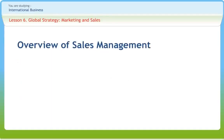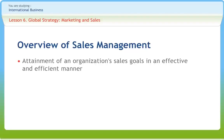Managing the sales function is a critical skill for the success of distributors and manufacturers in the power transmission or motion control industry. Sales management is the attainment of an organization's sales goals in an effective and efficient manner with the help of other management functions of planning, staffing, training, leading, and controlling organizational resources. Revenue, sales, and sources of funds fuel organizations, and the management of that process is the most important function.